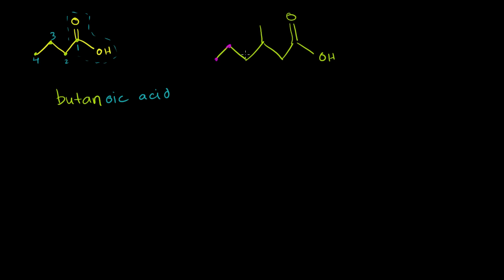So we have one, two, three, four, five, six carbons. So our prefix will be hex. So it's hexan. And it's clearly not just a hexane. It's a hexanoic acid. It has this carboxyl group right here. This is hexanoic acid.